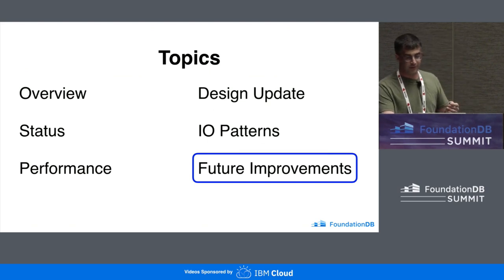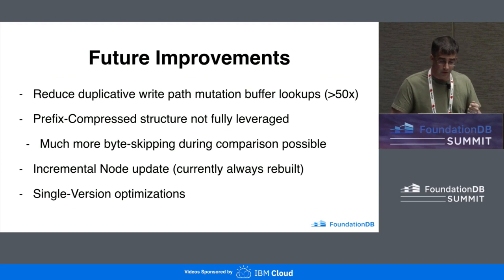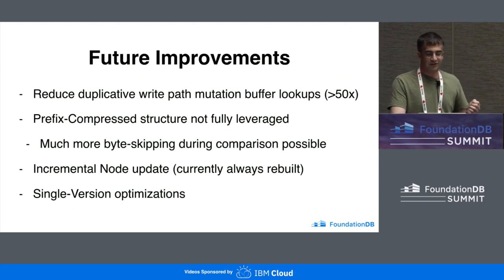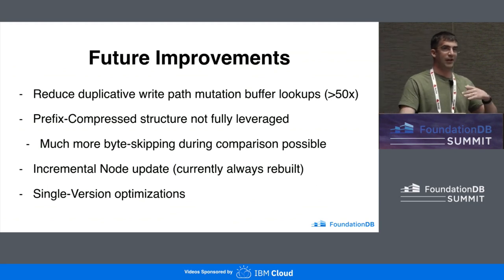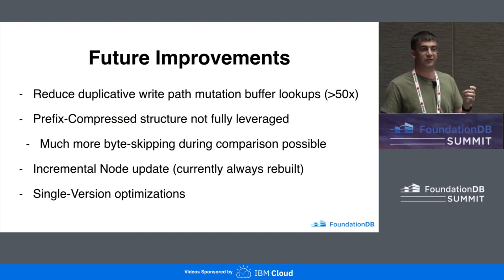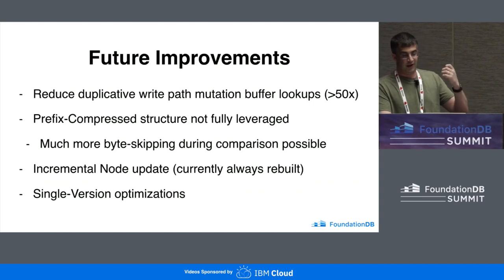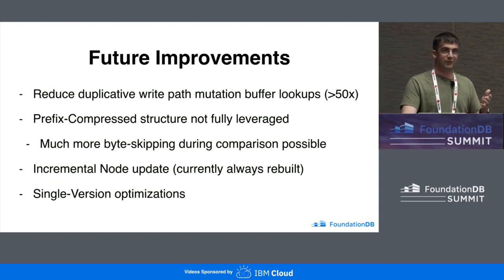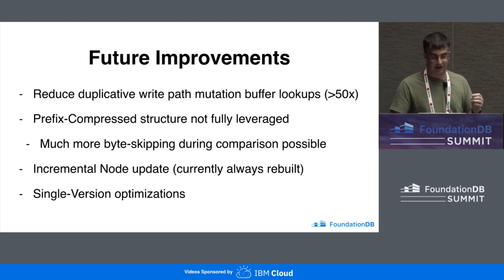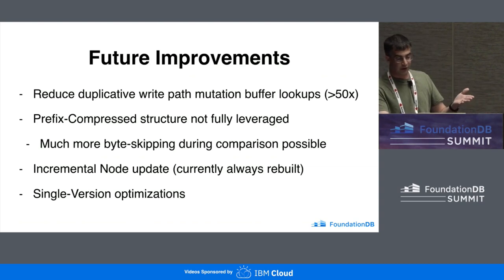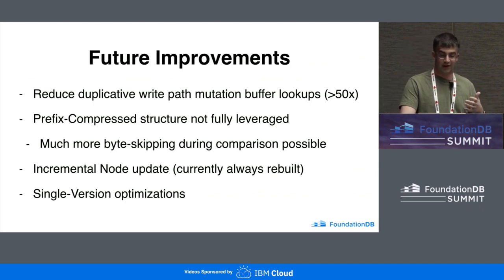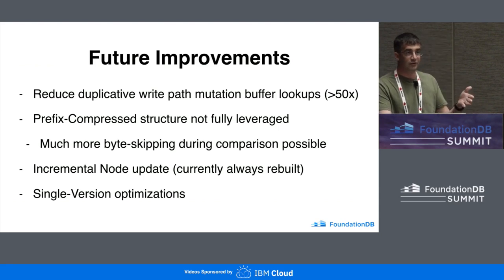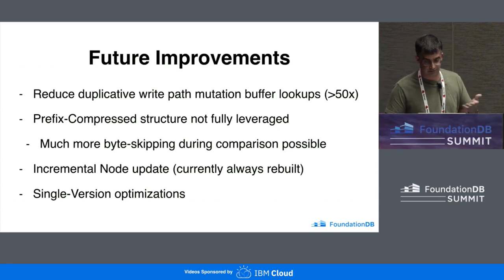Lastly, I want to talk about future improvements. First on my list is to reduce duplicative write-path mutation buffer lookups. There are a lot of extra lookups into the mutation buffer being done — roughly 50x for some workloads — because that code was written for correctness first and not performance. Additionally, as Diego presented earlier, his team is working on a replacement for the mutation buffer, which is currently just a std::map for convenience. The lookups themselves are going to get a lot faster, and very notably, insertions are going to get a lot faster.